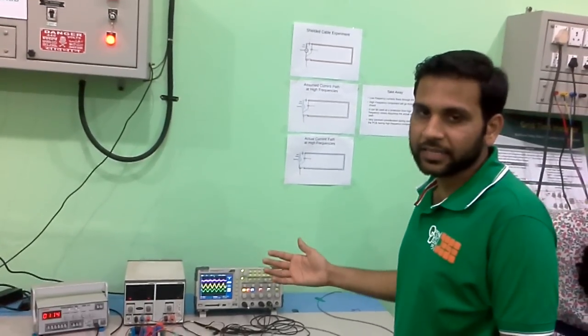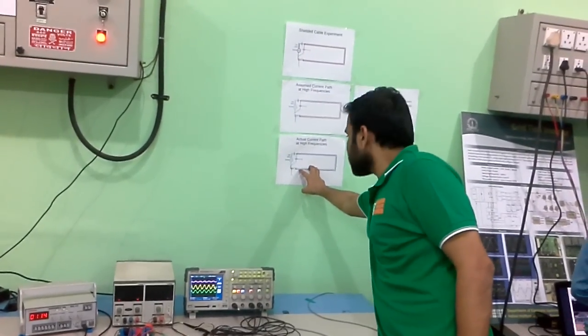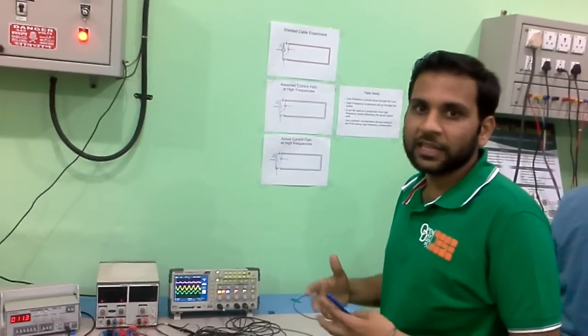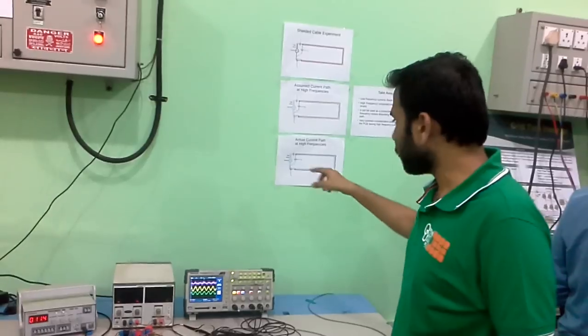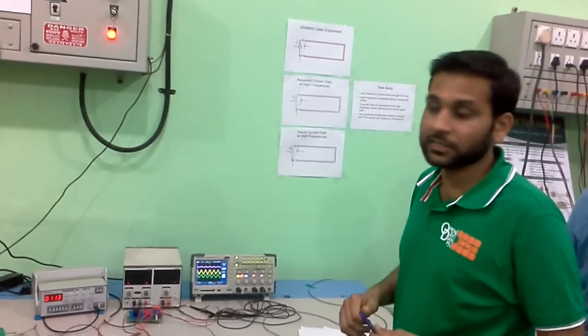Since they are connected in series, this will also have an inductance and this will also have an inductance. Because of coupling, all the high-frequency components will flow through sheath. Now why will the high frequency flow? Why not low frequency?